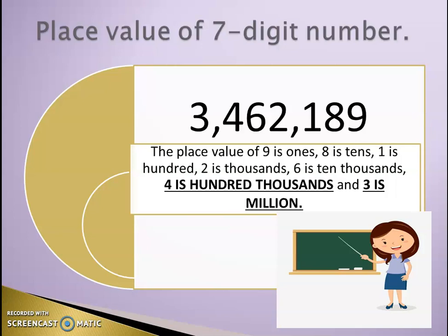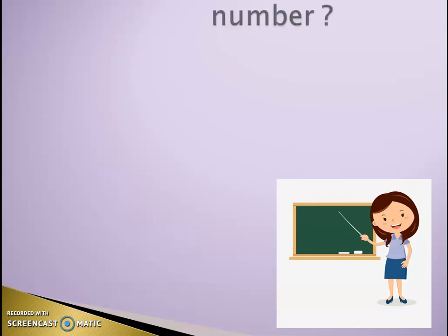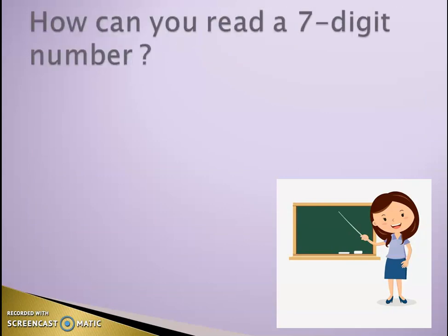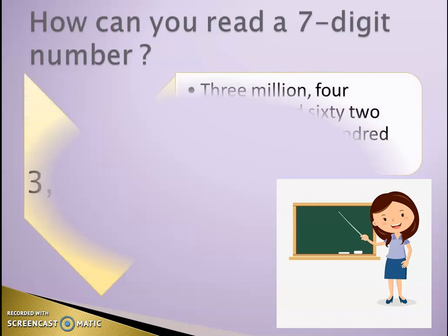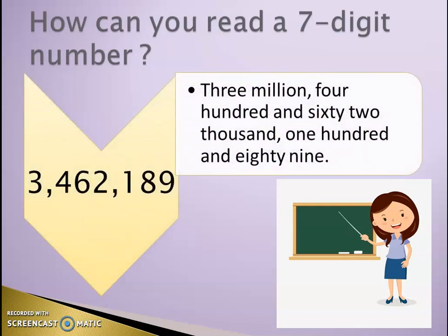The 7th digit is millions. Now, how can you read a 7-digit number? This is an example: three million four hundred and sixty-two thousand one hundred and eighty-nine. I repeat, three million four hundred and sixty-two thousand one hundred and eighty-nine.